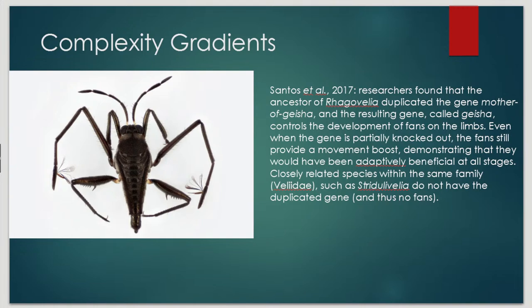One thing you have to understand about complexity gradients — and this relates to the famous quote from Origin of Species that creationists love to cite — is that the very next sentence says: if every variation within each generation is heritable and beneficial to its host, then those structures will just keep evolving. There's no reason for that evolution to stop. We talked about the sharp-nosed pufferfish example — looking progressively more like Canthigaster valentini confers slightly more protection from predators like wrasses and groupers. Every step has to be adaptively beneficial.